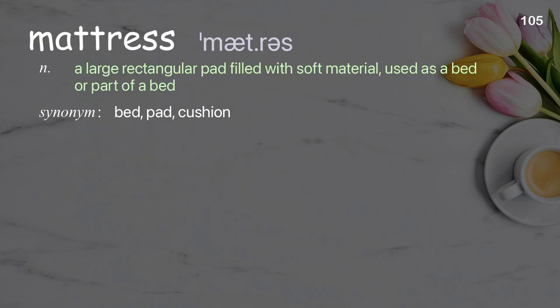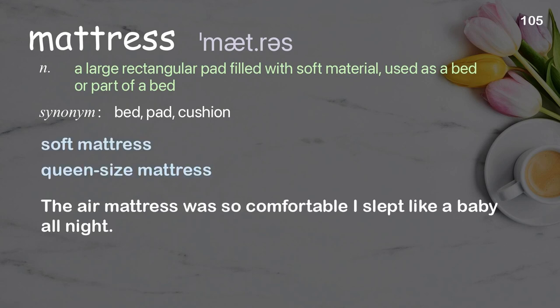Mattress: a large rectangular pad filled with soft material used as a bed or part of a bed. Examples: soft mattress. The air mattress was so comfortable, I slept like a baby all night.